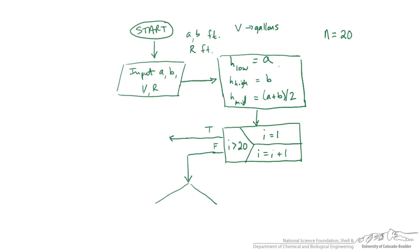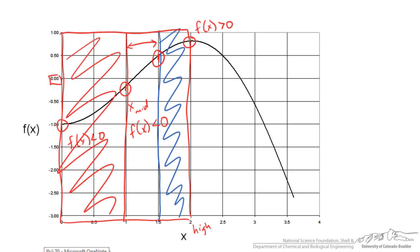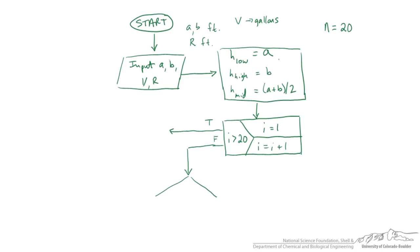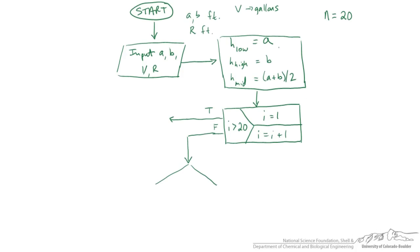We start out the bisection technique. The way to determine if the zero is in an interval is by looking at the function values. So for example here, we know that the zero has to be in this region because f of x at the lower bound times f of x at the high bound is a negative number. We're going to actually put in here a conditional. If f of h low times f of h mid is less than 0, then the solution has to be between h low and h high.